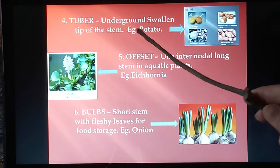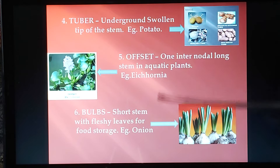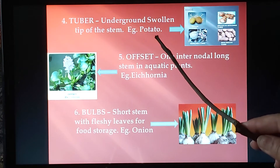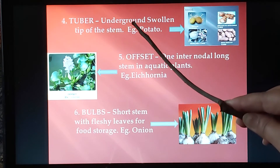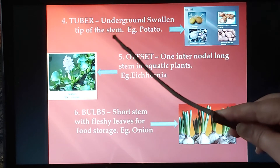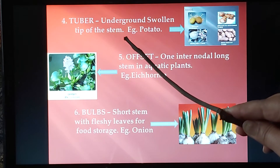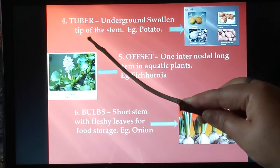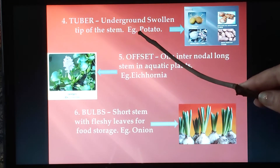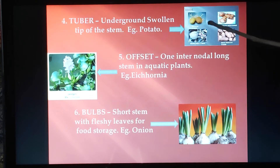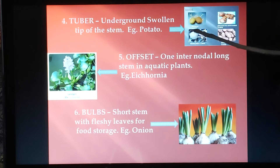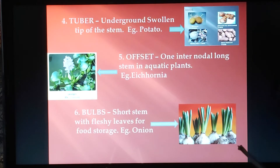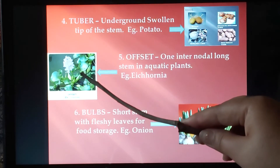Next are tubers, which you are all familiar with. The best example is potato. Tubers are the underground swollen tips of the stem — only the tip part is swollen, not the rest of the stem. Potato grows under the soil and is used as a mode of reproduction for new plants.